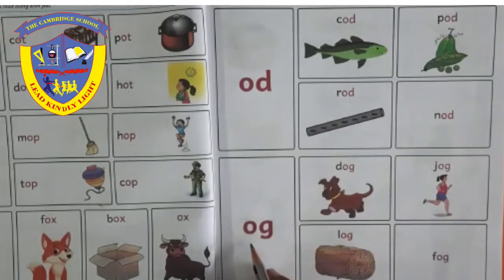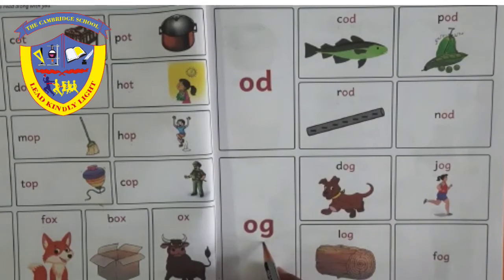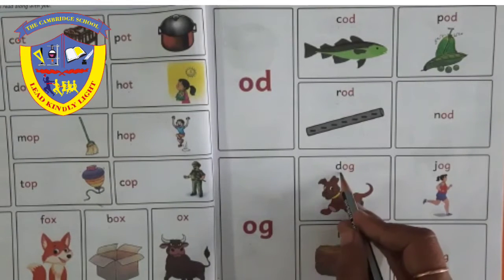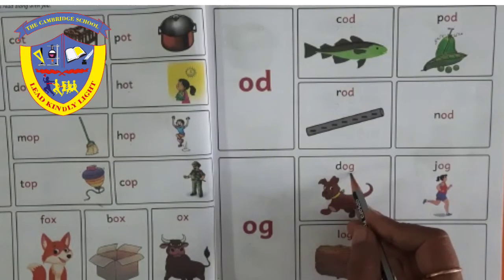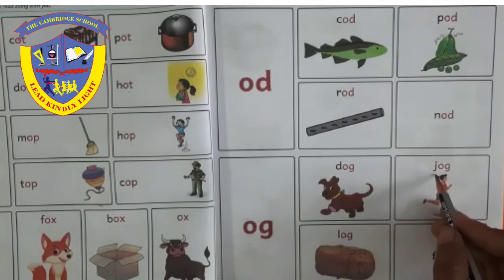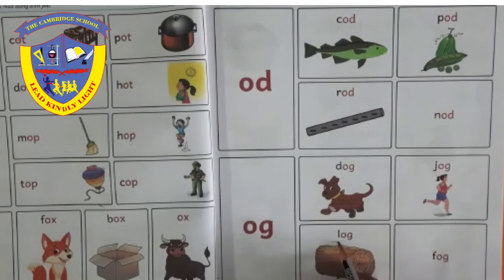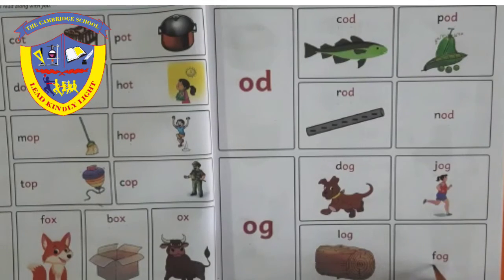Next is 'og'. D-og, dog. J-og, jog. L-og, log. F-og, fog. Once again.